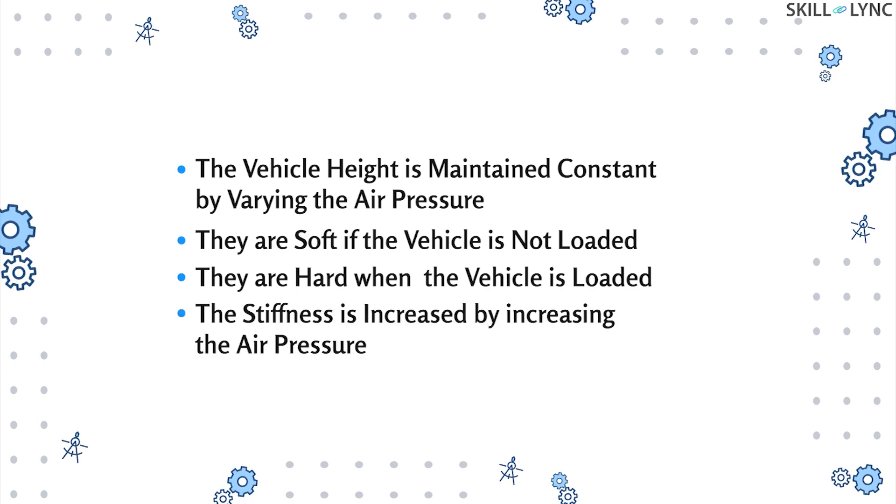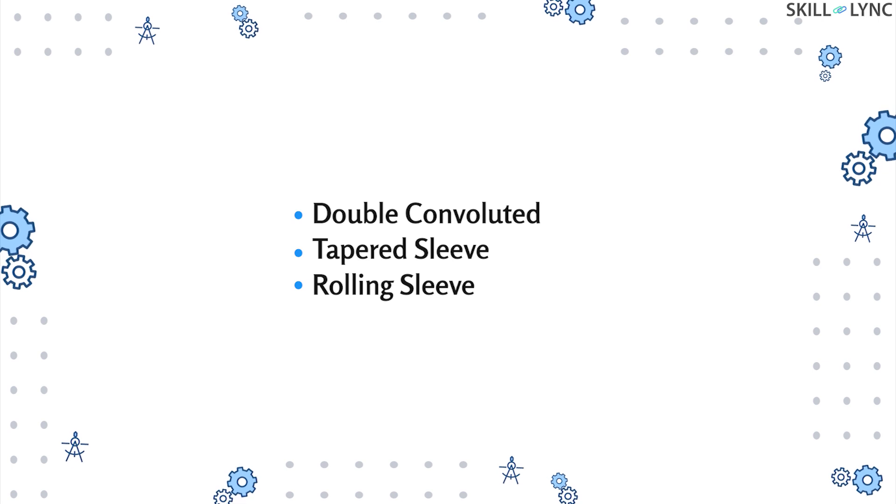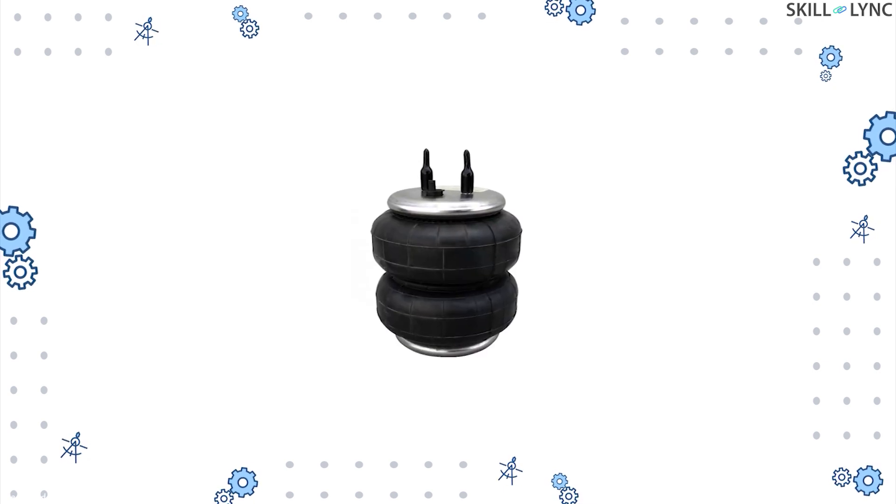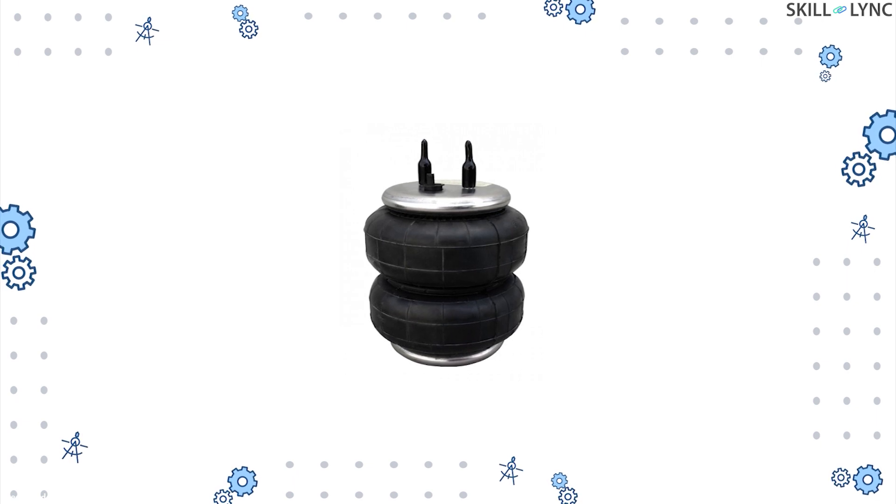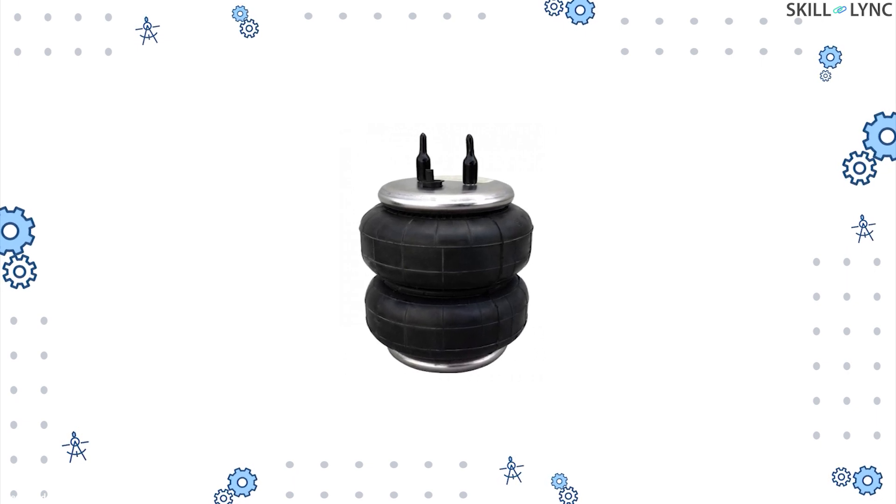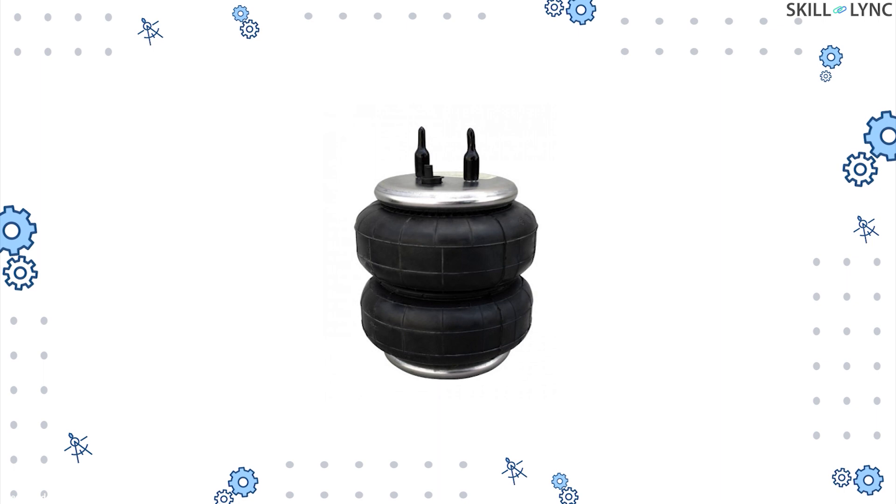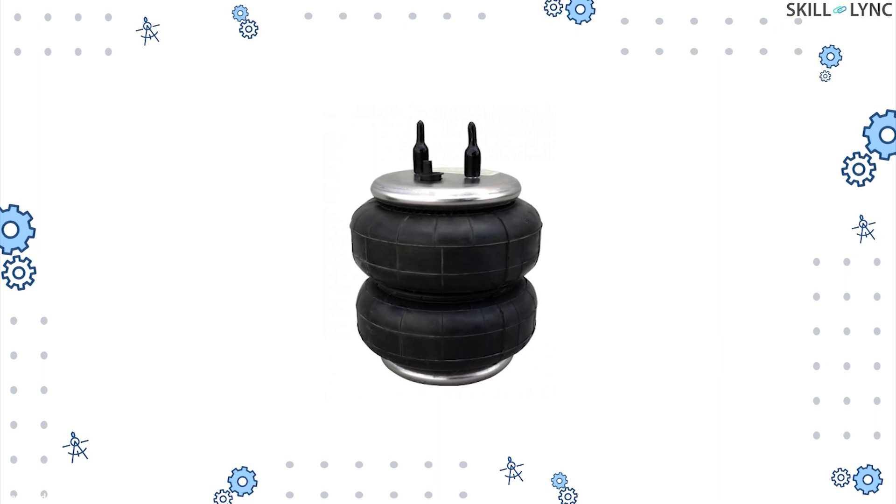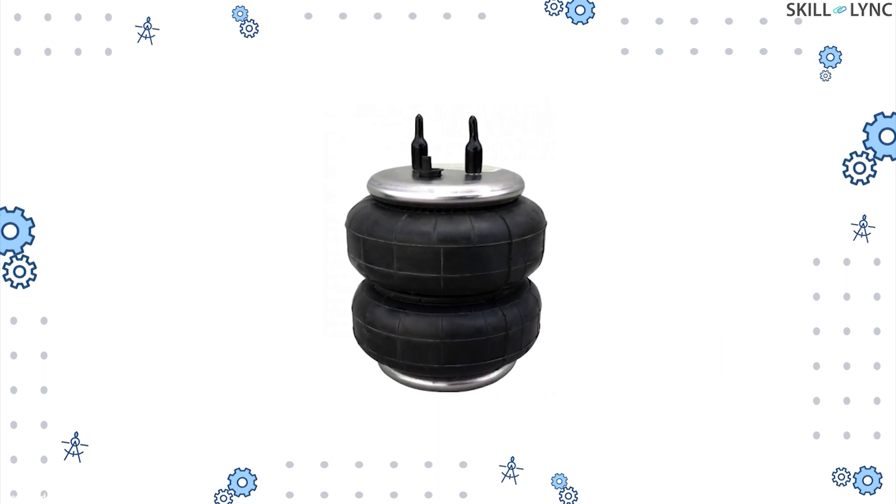Generally there are three basic types of springs available: double convoluted, tapered sleeve, and rolling sleeve. The double convoluted spring looks like two small tires stacked upon each other. In this type, the stroke length is less but the load-carrying capacity is high. These springs are progressive springs, which means that they get stiffer as they are compressed. This type is usually best suited for the front suspension.